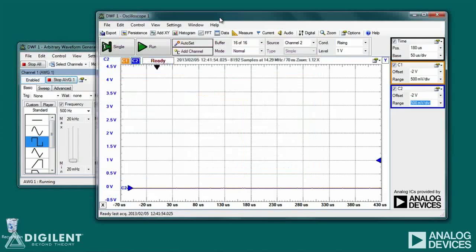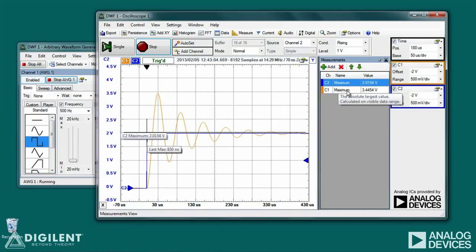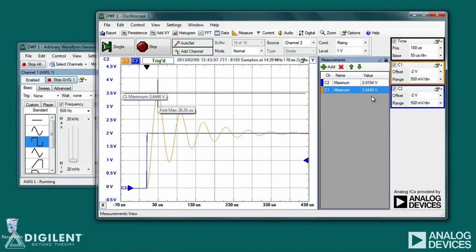Applying power and acquiring the data, I have a maximum value of about 3.4 volts. To get a closer reading for that, let's open up the measurement. My channel 1 maximum is 3.44 volts.